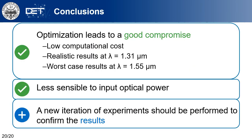In conclusion, the optimization leads to a good compromise. The low computational cost allows realistic results at 1.31 micrometers and a worst-case analysis for 1.55 micrometers. The device shows an increase in cutoff frequency and lower sensitivity with respect to input optical power. A new iteration of experiments should be performed to confirm the results, including the study of other quantities not yet taken into account, such as the dark current of the device.